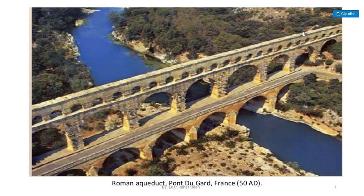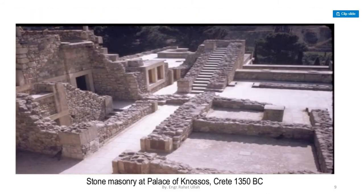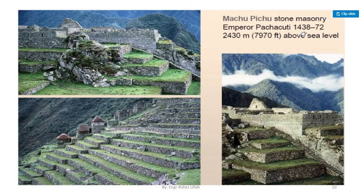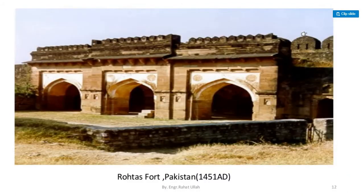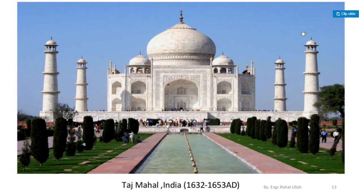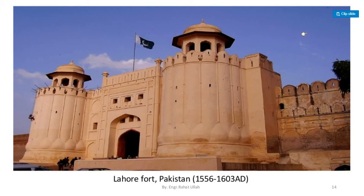Here you can see some slides showing stone masonry. Here is another slide showing brilliant and excellent stone work. Here you can see a slide showing stone masonry situated at 2430 meters above sea level. Here you can see the great wall of China. In this slide you can see the Taj Mahal, which is made up of white marble. Here you can see the picture of Lahore Fort, Pakistan.